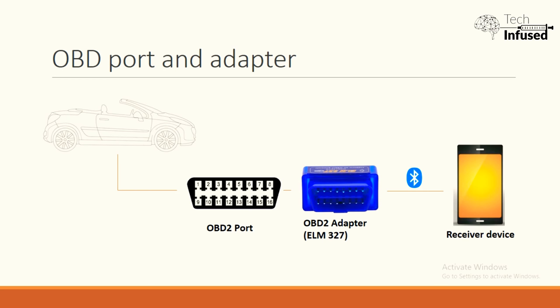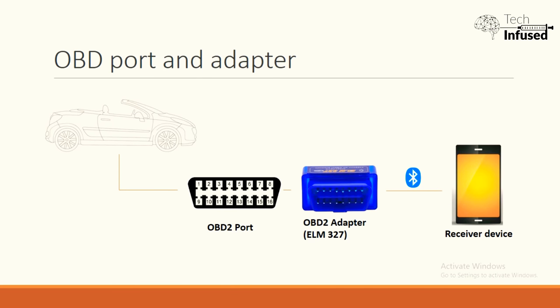Every vehicle has had an OBD2 port for many years. The OBD technology came into picture in 1996, and in India, post 2010 or 2012, almost all modern vehicles have a port called OBD2. This is a 16-pin port which is placed exactly under the steering wheel or under the glove box. To this port we can connect a device known as an OBD2 adapter or OBD2 scanner.